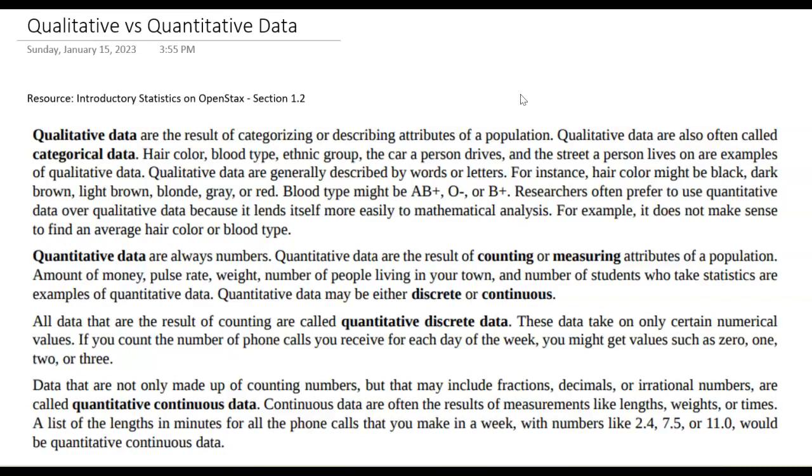Quantitative data is always numbers. They are the result of counting or measuring attributes of a population. Money, pulse, weight, the number of people in your town, the number of students who take statistics are all examples of quantitative data.